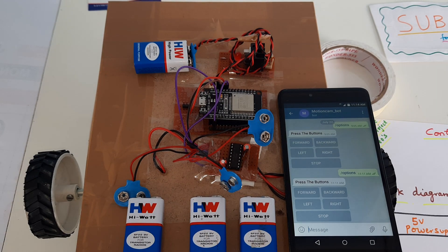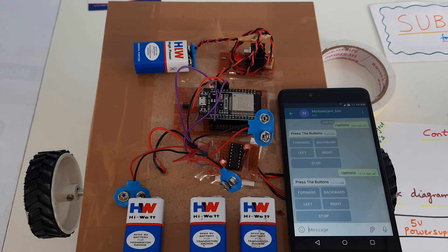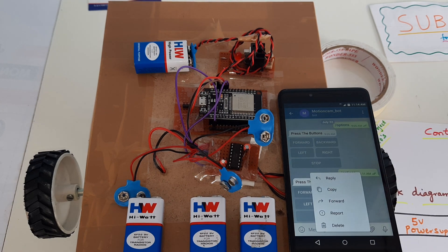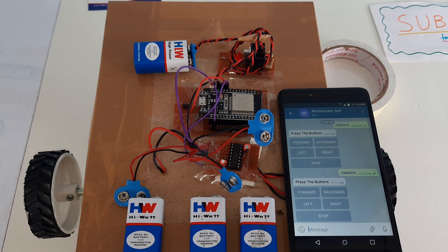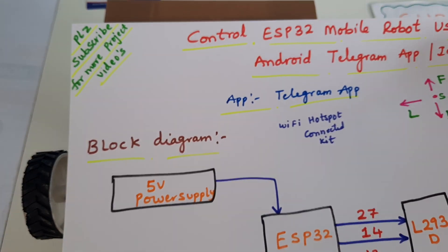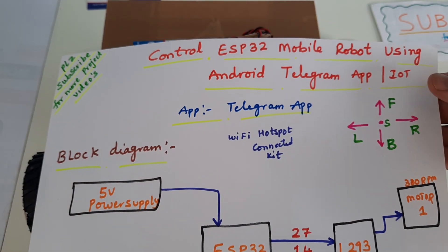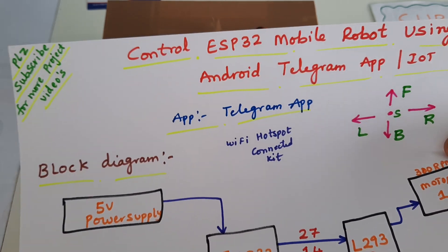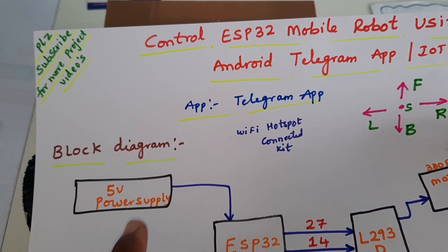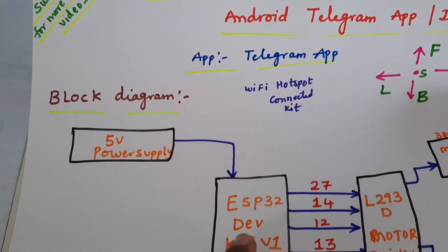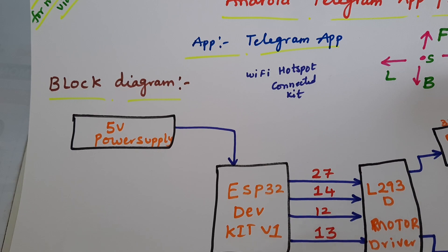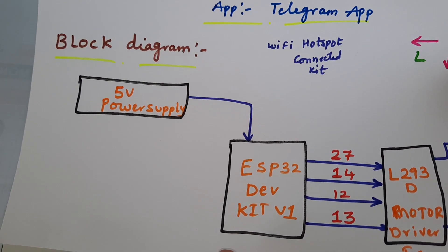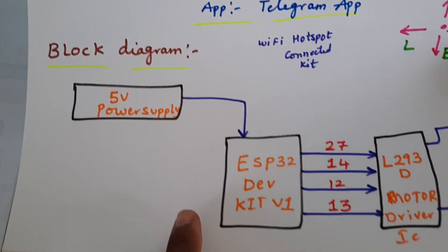Hi, we are from SVA Sambaren. The project title is: Control ESP32 Mobile Robot Using Android Telegram App. We are using the Telegram app, and the kit is connected to a Wi-Fi hotspot module with a 5 volt power supply.